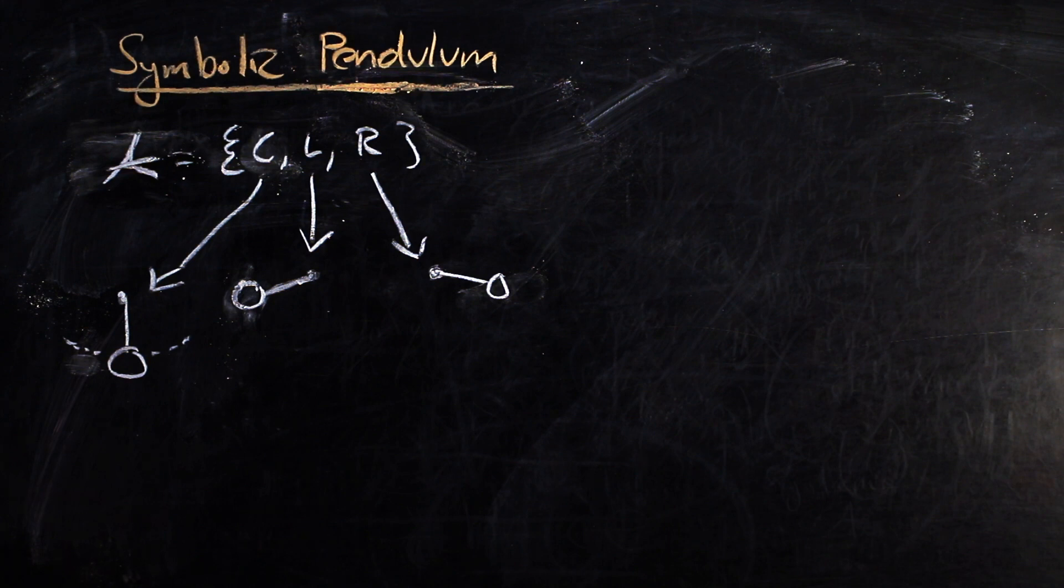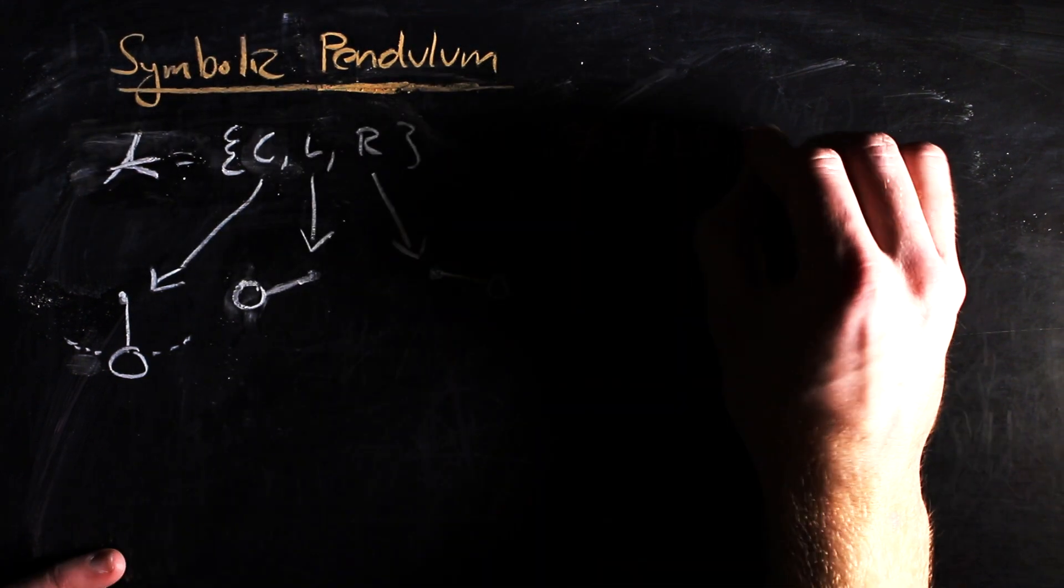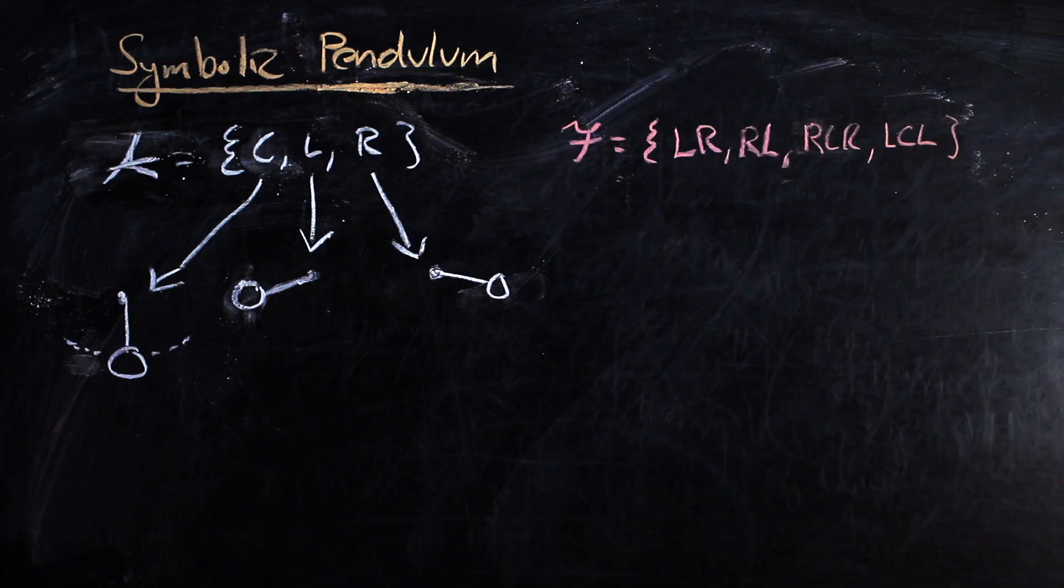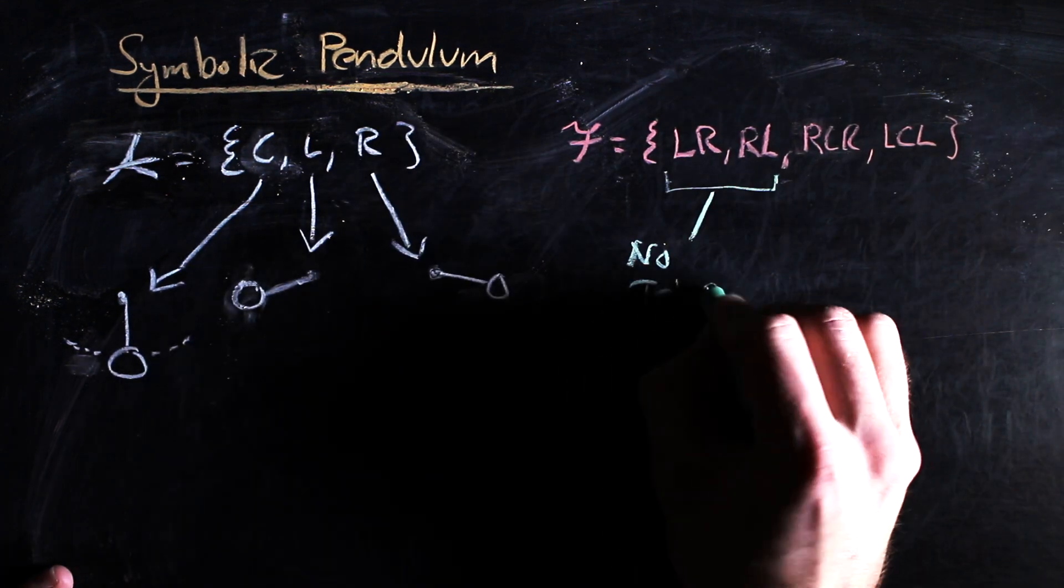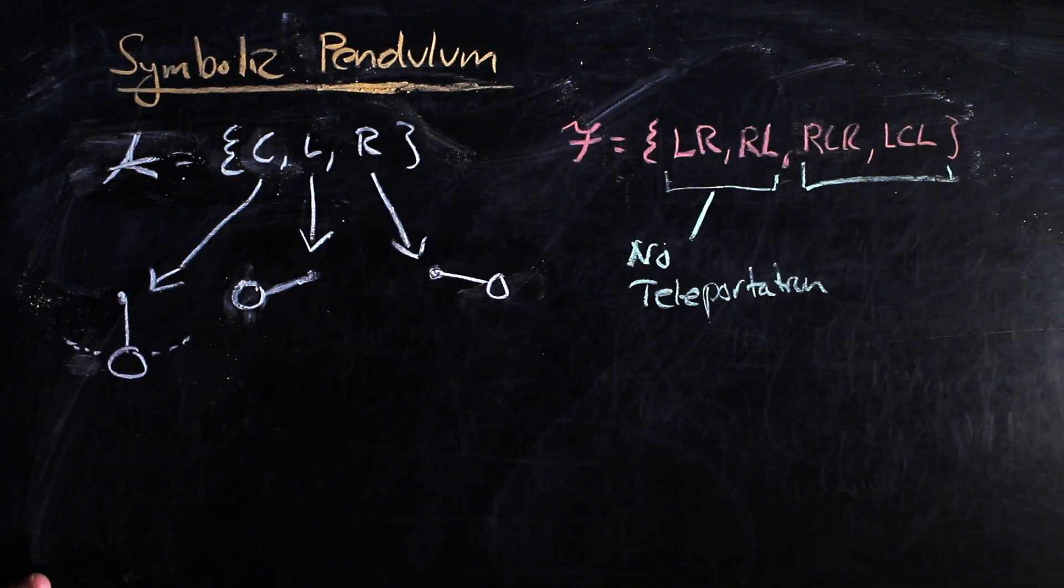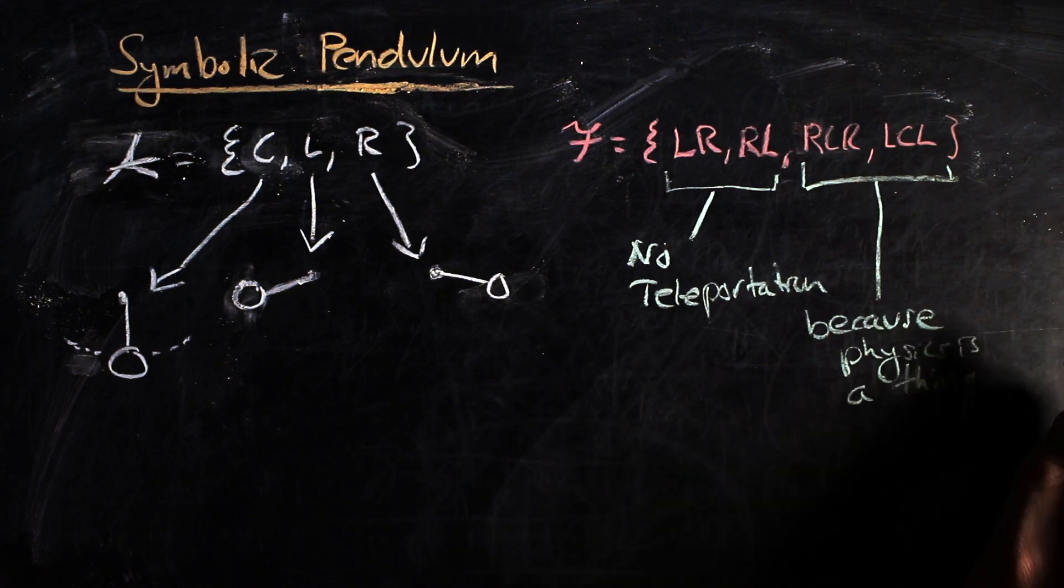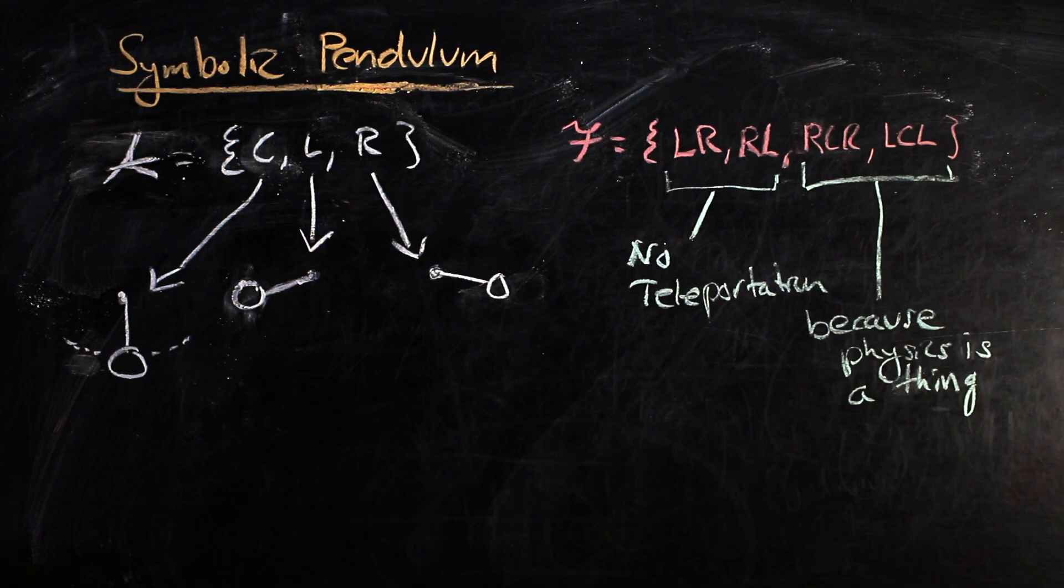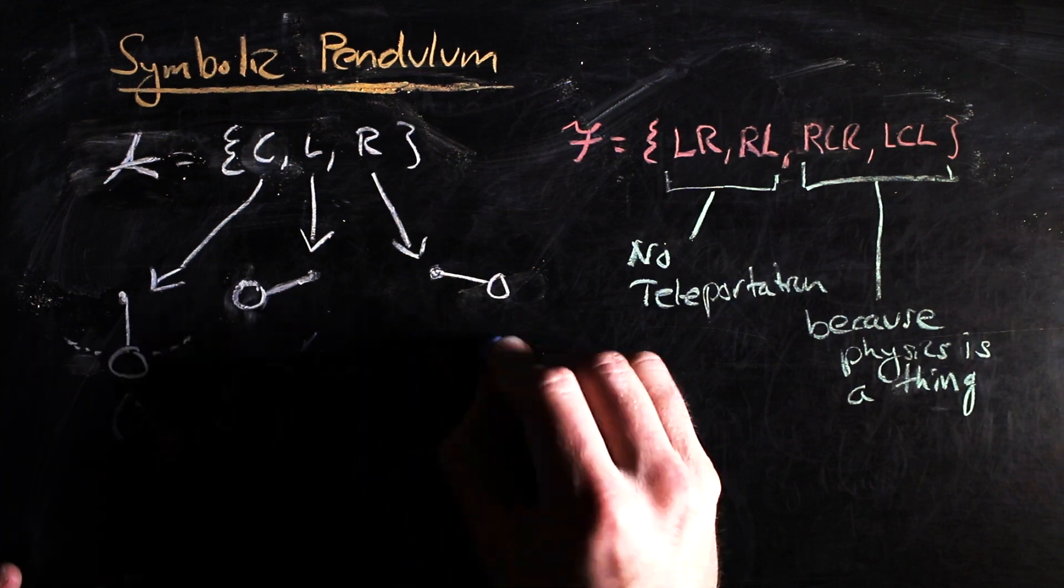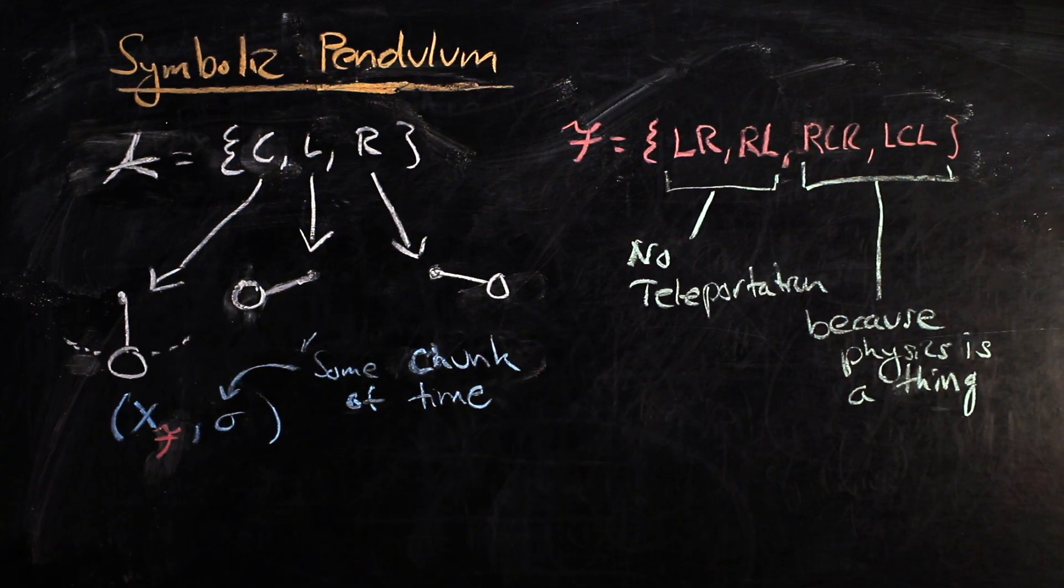Oversimplifying things, we could restrict the words LR, RL, RCR, and LCL because one, the pendulum has to pass through the center in order to reach its other apex, and two, the pendulum doesn't pass through the center and return to its previous apex. The shift map here would be analogous to some discrete chunk of time.